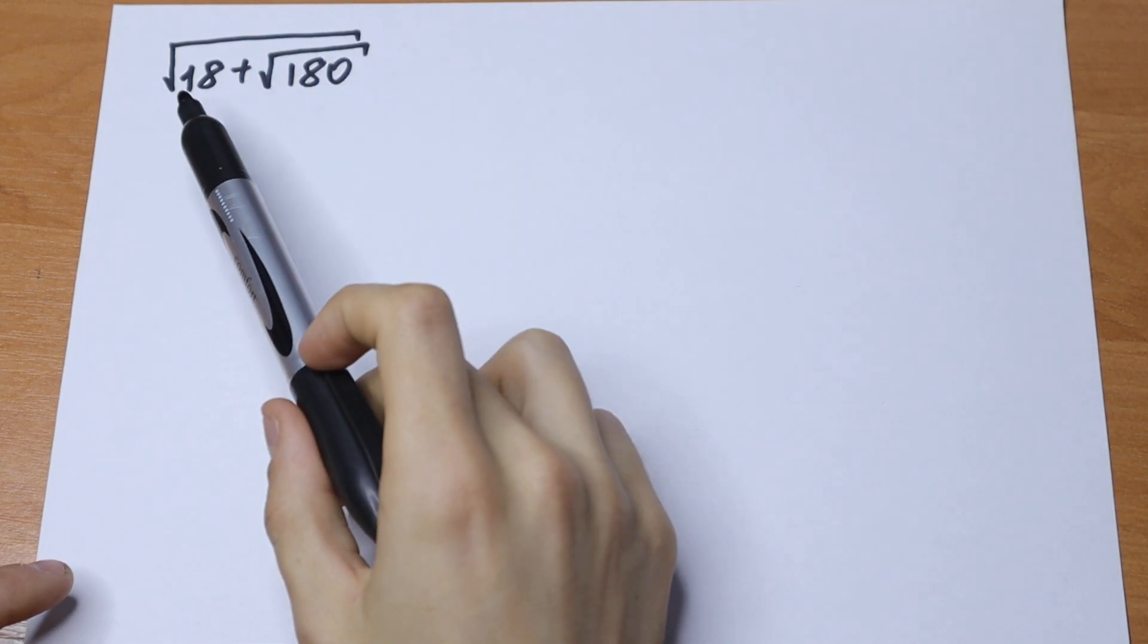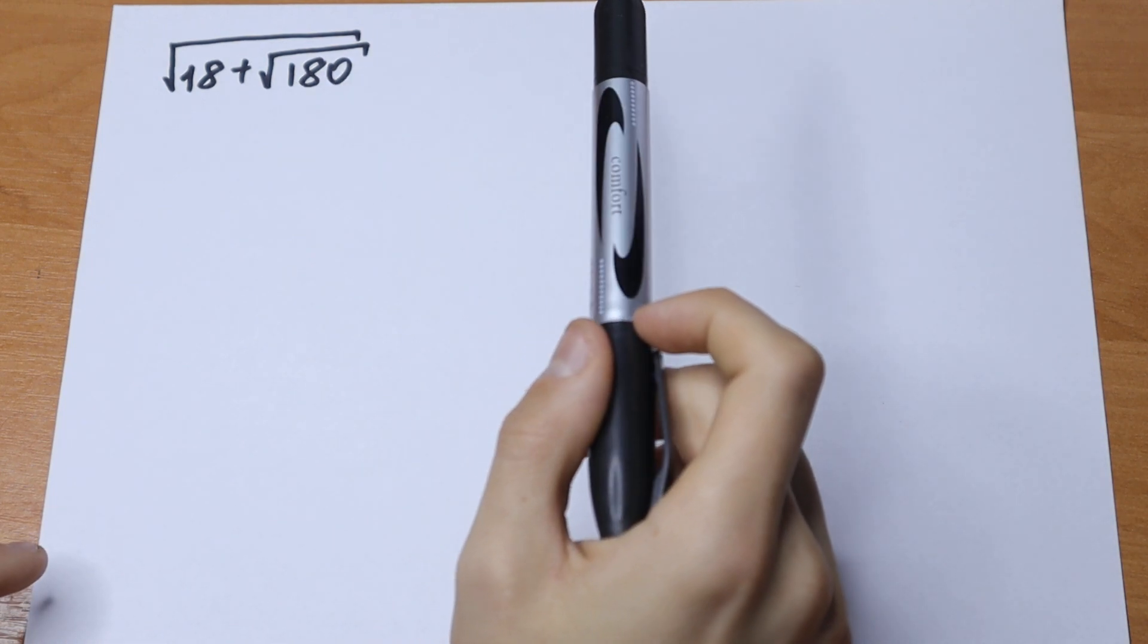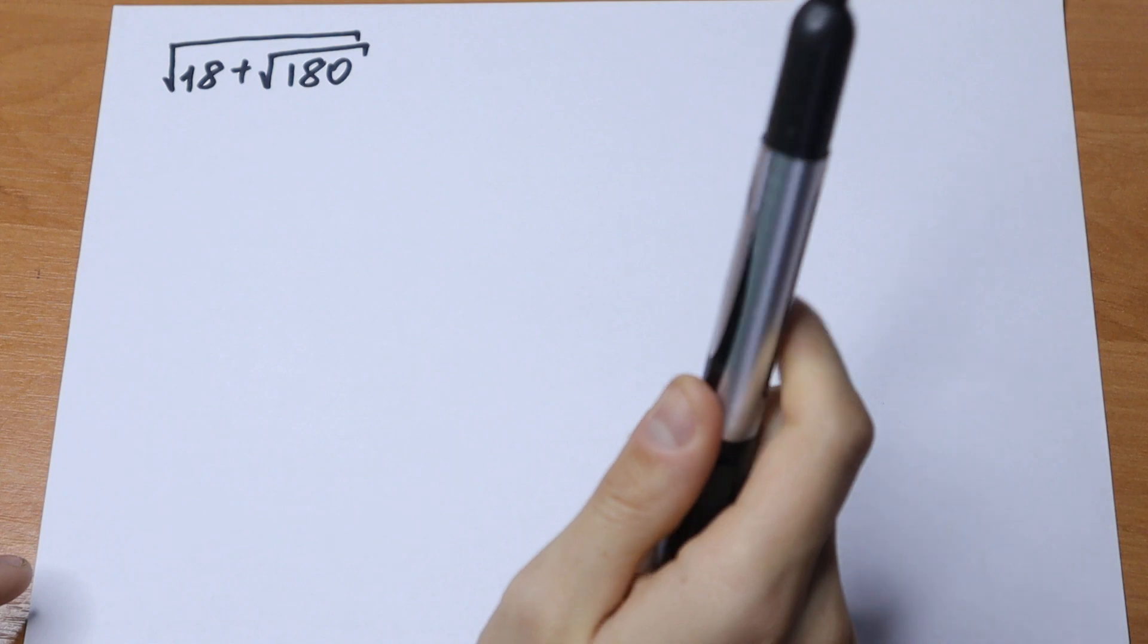We need to simplify square root of 18 plus square root of 180. So let's start and try to simplify this.